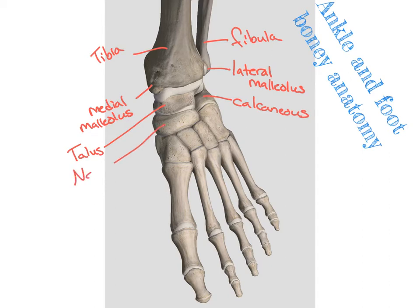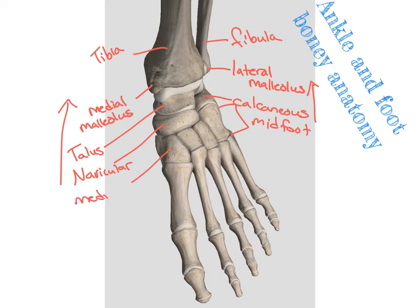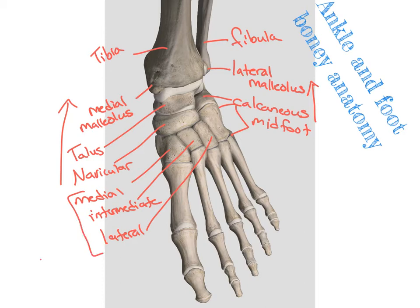Looking forward, we have the navicular. That group of bones makes up the rear foot — everything posterior to the navicular creates the rear foot. Through the middle section, or what we call the midfoot, we have our tarsal bones: our medial, intermediate, and lateral cuneiforms. And then on the lateral side, we have the cuboid.